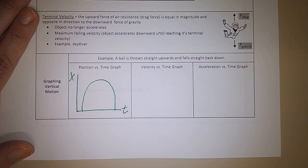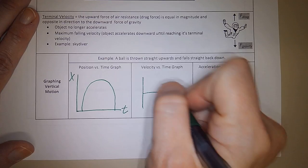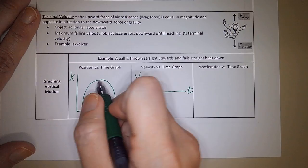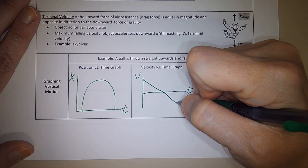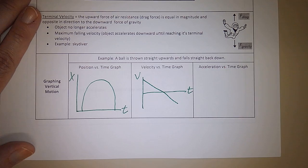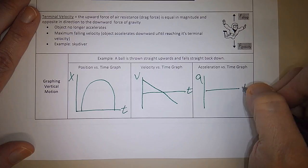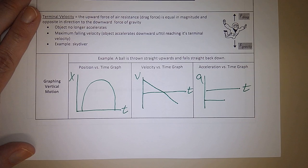So the v versus t, it's going from some positive number to zero to some negative number. So it's going to be a straight line going from the positive quadrant across the zero, and it's going to keep going down into the negative. Your acceleration versus time, you know that your acceleration is constantly negative 9.81 on Earth. So it's just a flat line in the negative. That's not too hard.